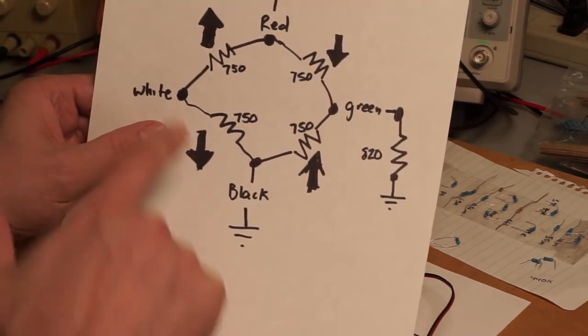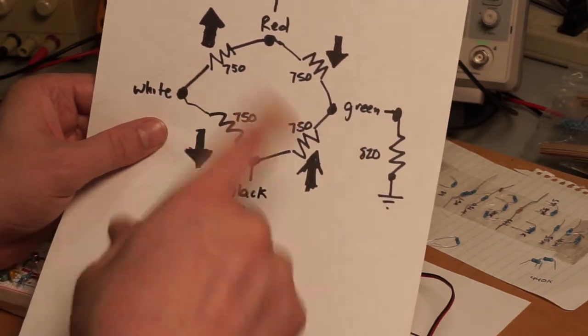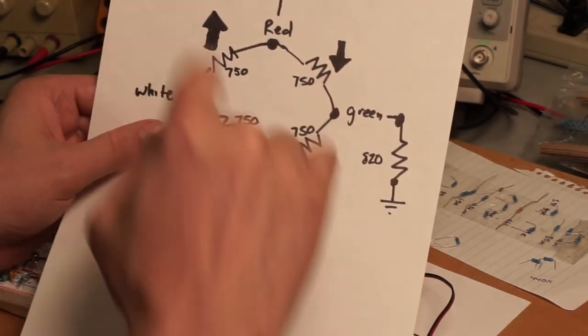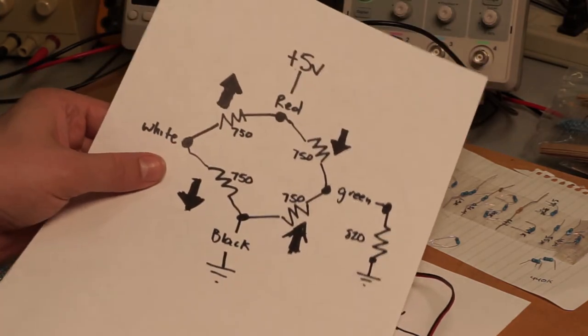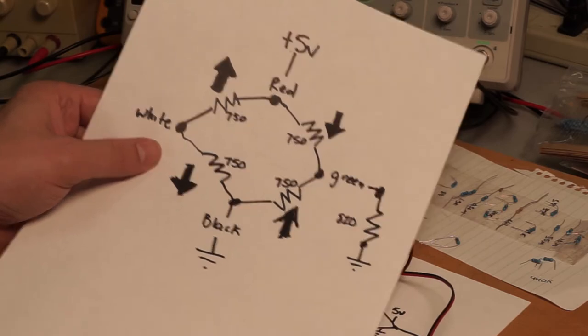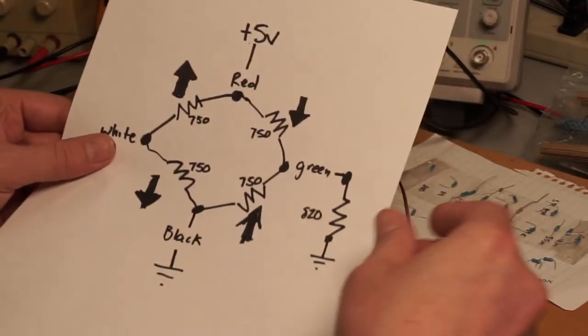And so it acts like a Wheatstone bridge where we apply plus 5 volts here and ground in the bottom here. And then what you're looking for is a differential between white and green. And you'll see if you kind of move these down and move these up, it'll bias the voltage towards the bottom or the top, depending on if you're adding or removing weights to the scale ultimately. And so that's how that works.